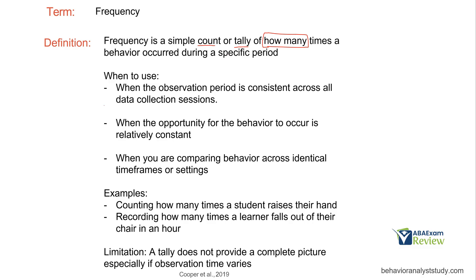When do we use frequency? We can use it when the observation period is consistent across all data collection sessions — that's pretty key. We need however long our observation is, whether it's 30 minutes, two hours, seven hours, whatever it is, we want it consistent. Because if you count 20 yesterday and 30 today, but you observed for five hours yesterday and four hours today, how do you compare those frequencies? You can't. So you want the observation period consistent if you're just going to use a count.